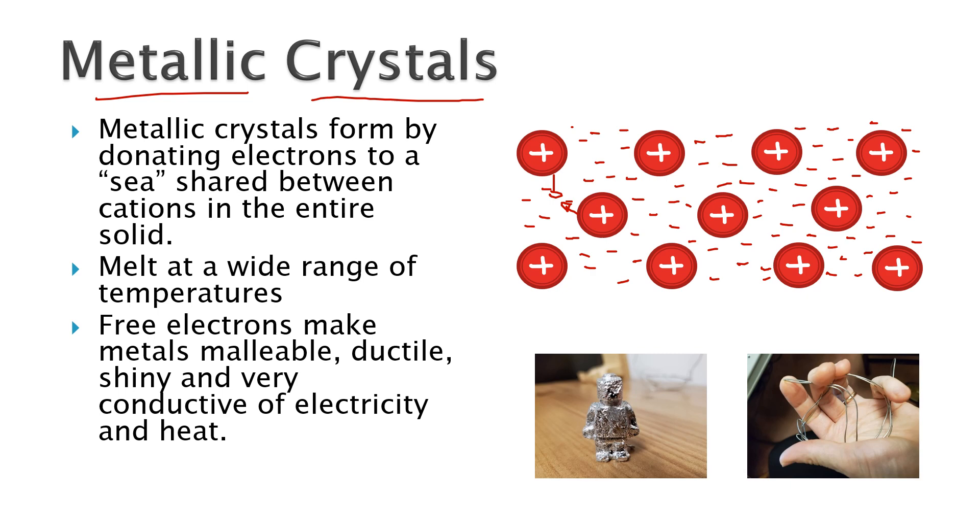Now there's other properties too. Metals tend to be shiny and it's because these free electrons will absorb and release the same light wavelength. And so that's why if you have a mirror or chrome or any piece of metal and you polish it, it will reflect light very well.